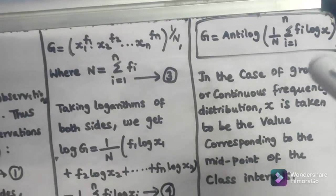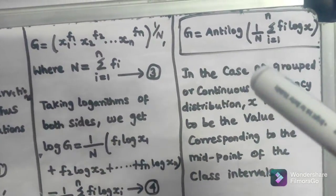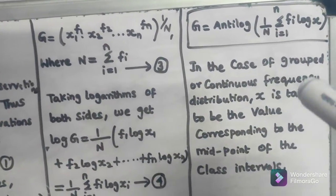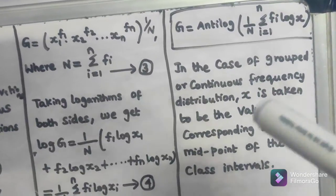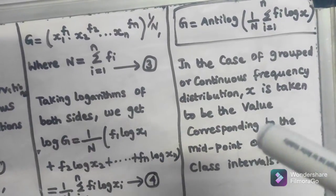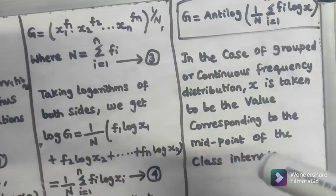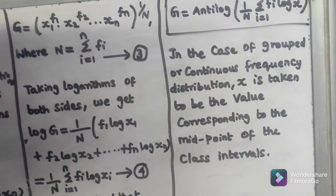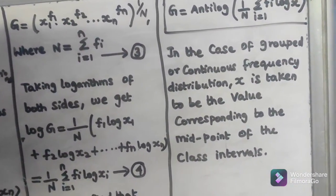In the case of grouped or continuous frequency distribution, x is taken to be the value corresponding to the midpoint of the class interval. Thanks for watching this video, have a nice day.